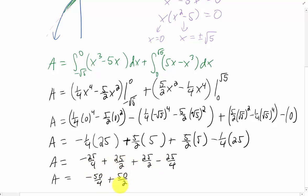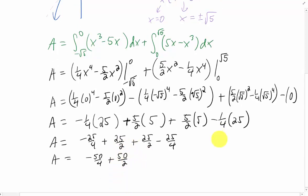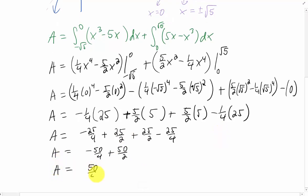We could then think of this 50 halves as 100 fourths, thus giving us a final answer of 50 fourths, which reduces to 25 halves, and that looks good to me.